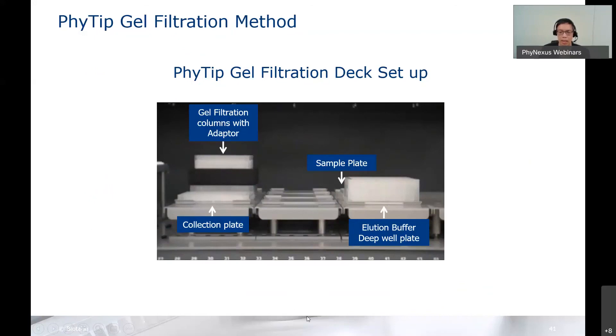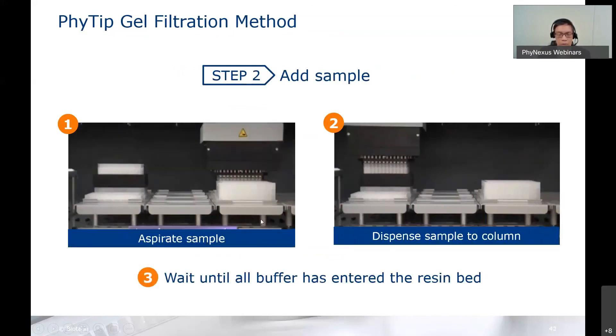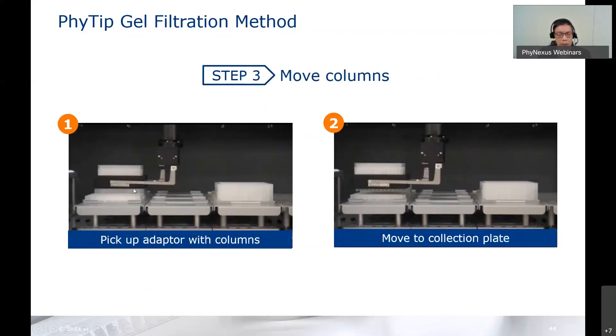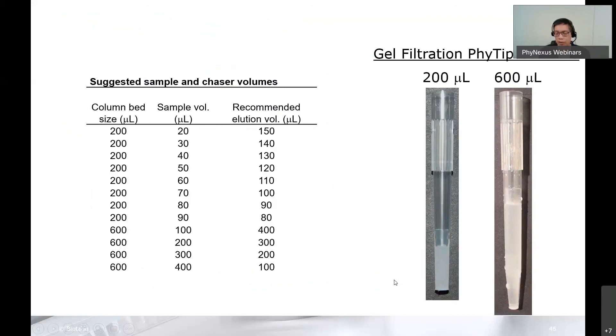These are just a little bit clearer pictures—how we set up the deck with the columns, collection plate, waste plate, sample, elution buffer. First, we aspirate equilibration buffer and dispense that to the column, do a pause. Next, we'll aspirate sample, add that to the column, and do a pause. Then we move the columns to a clean collection plate. We will then add our elution buffer—aspirate, dispense, pause. And our purification is complete.